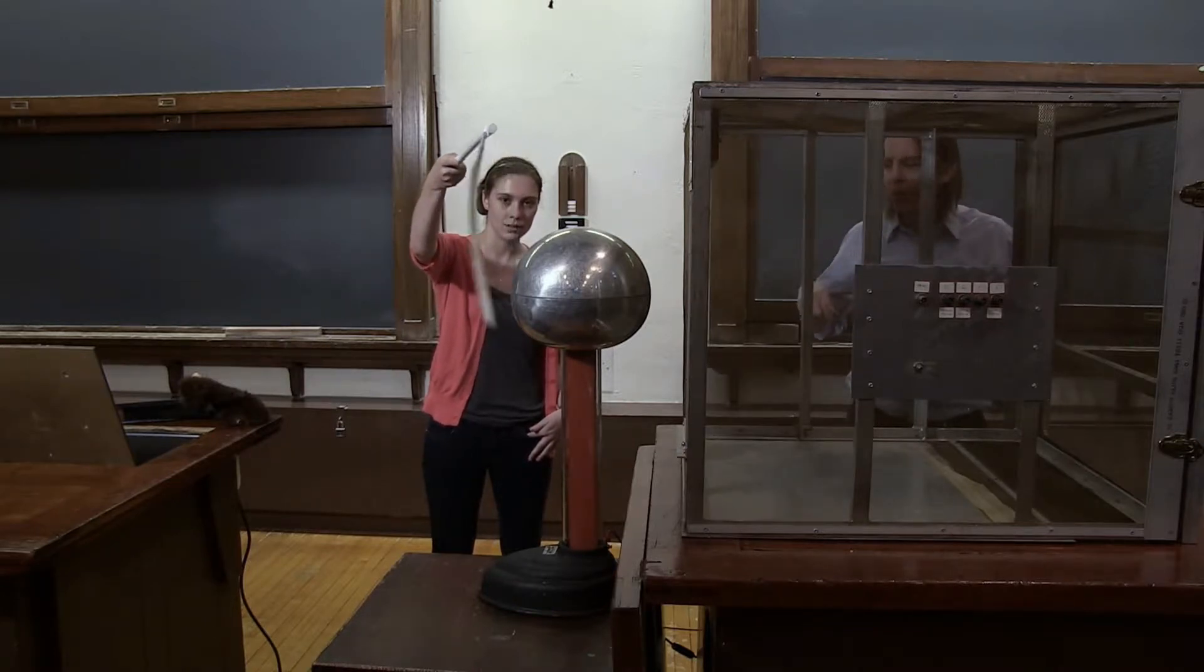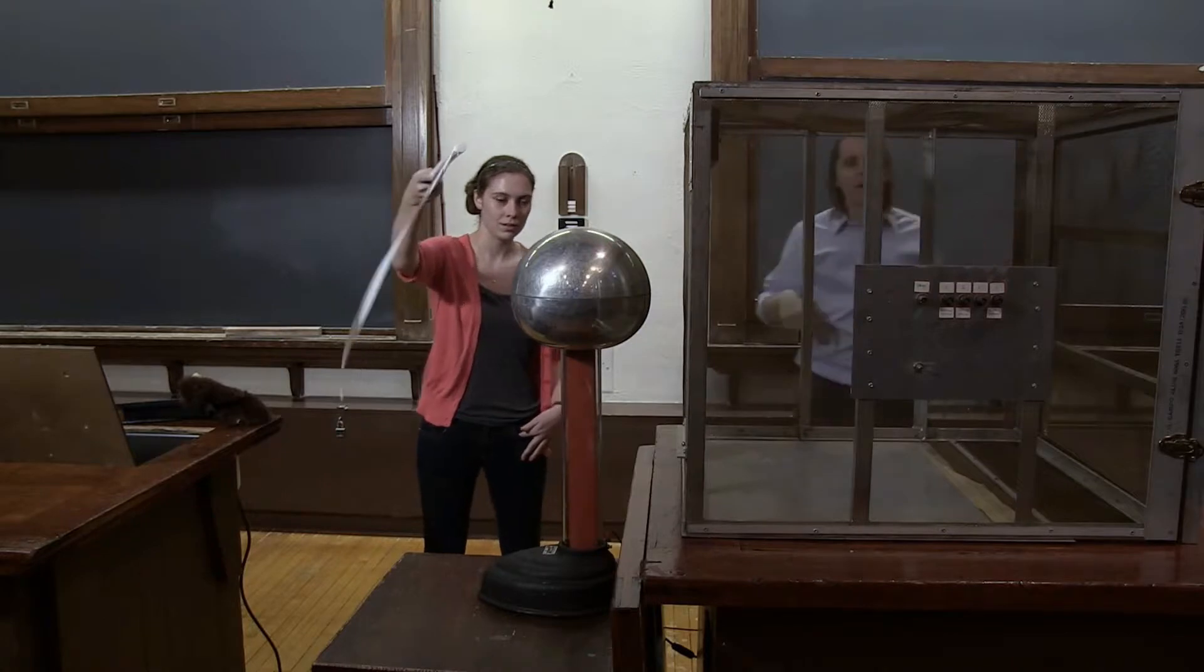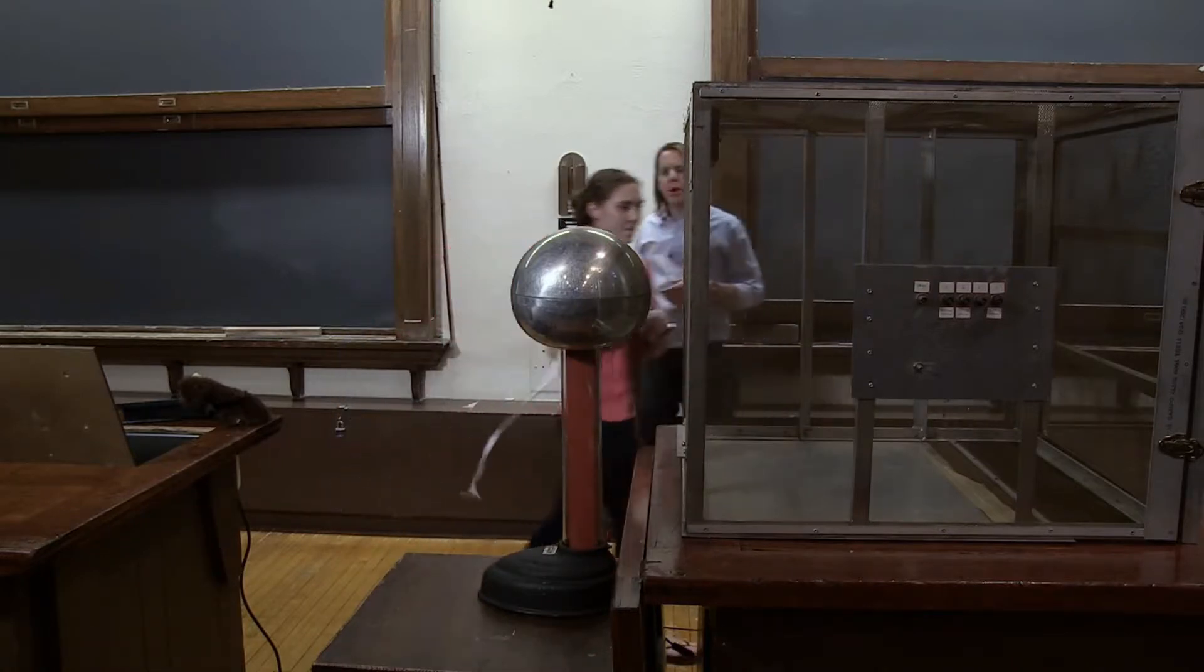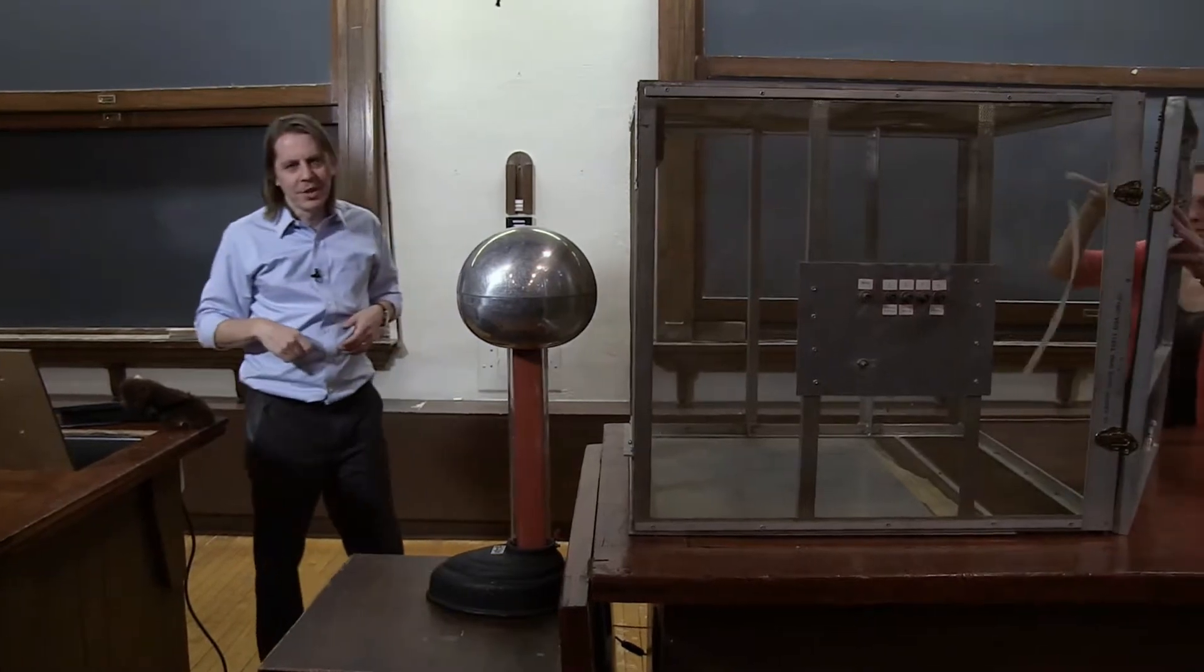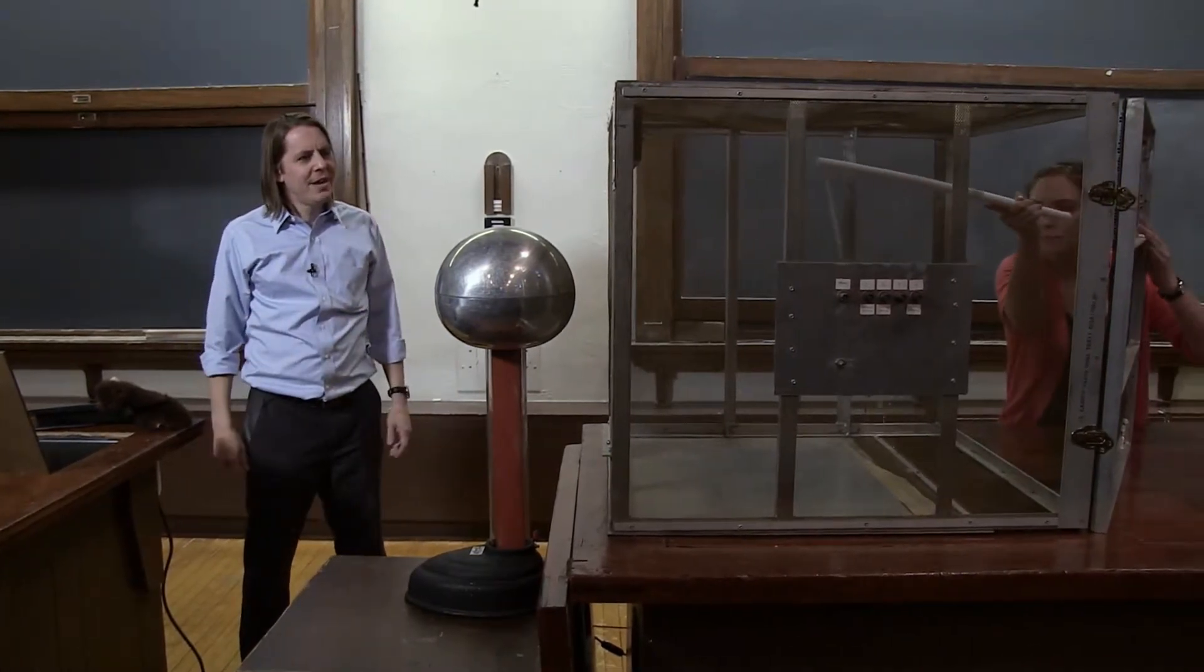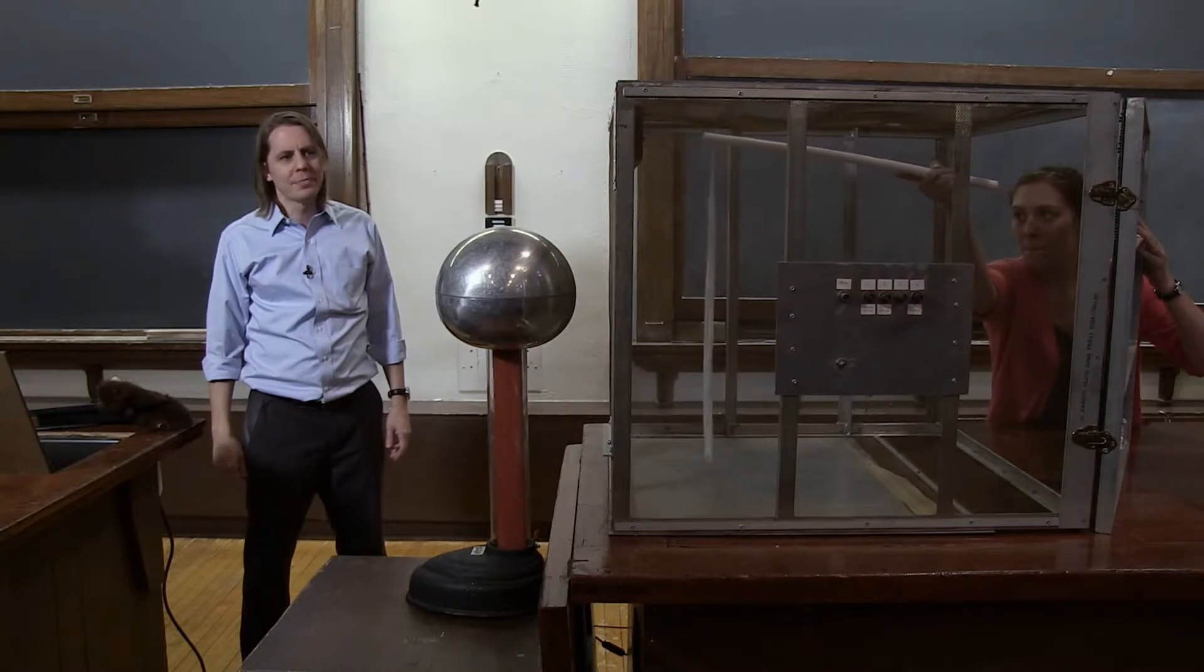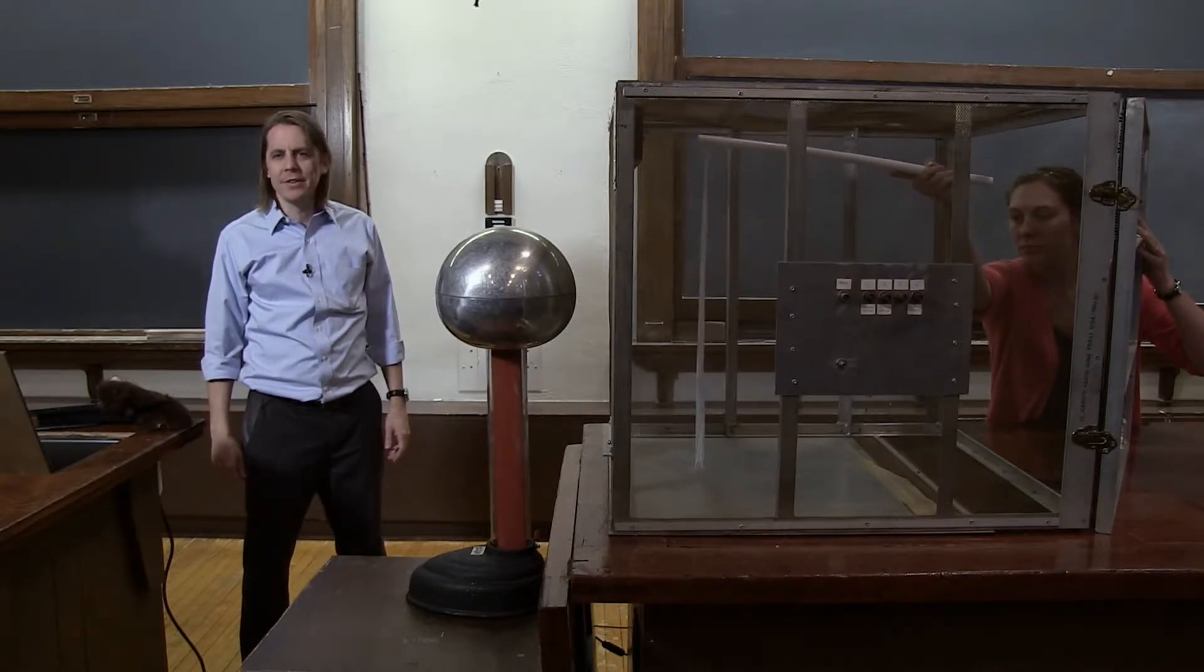There's a large electrostatic repulsion between the two. And now Catherine is going to take it and hold it near the Van de Graaff generator, but inside the Faraday cage. And when she does that, you're not going to see any electrostatic repulsion. The tape just hangs there.